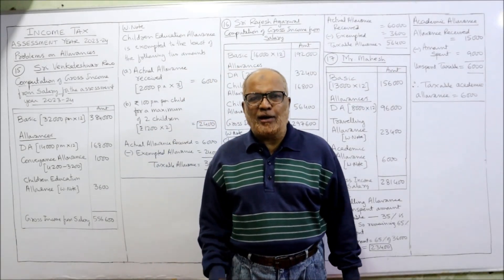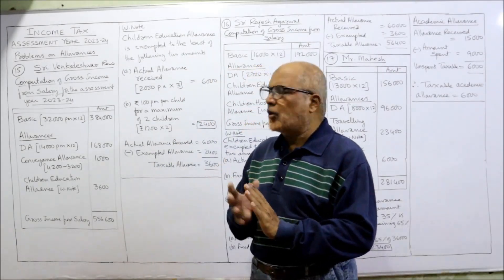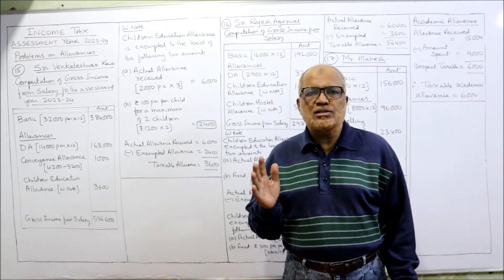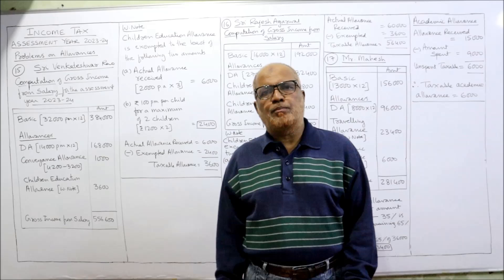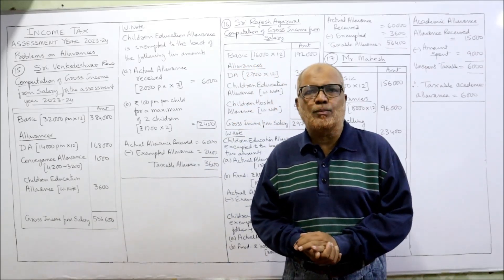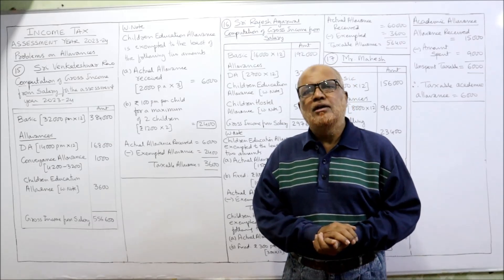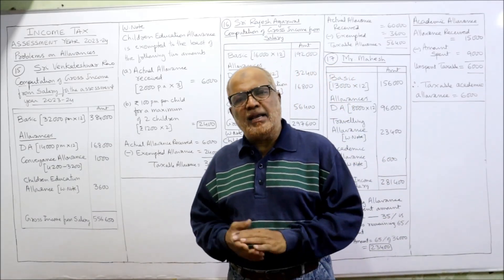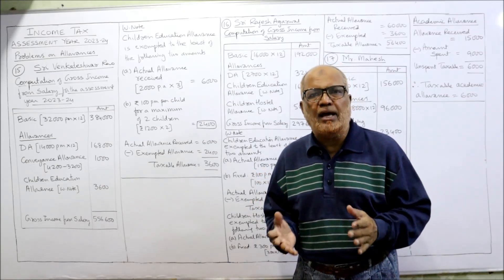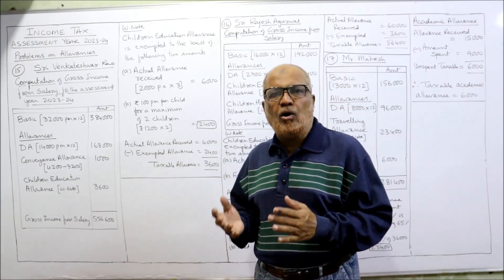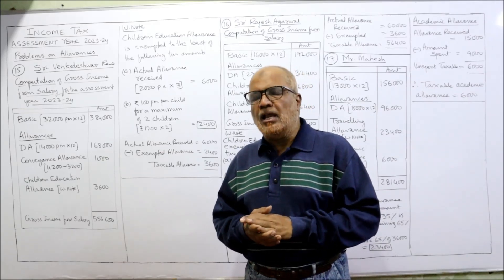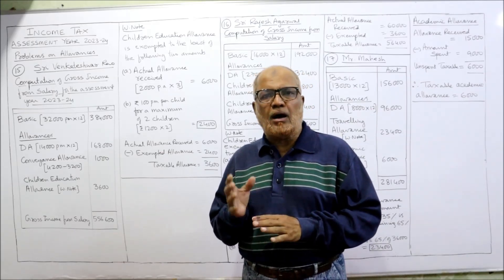Hello everyone, welcome to my channel. I'm Harsham Ali Khan. So far 14 problems have been completed on allowances. In this video, the last three problems on this topic of allowances will be explained, then we will start the next topic called Perquisites. Allowances are of different types like entertainment allowance, house rent allowance, transport allowance, children education allowance, children hostel allowance, etc.